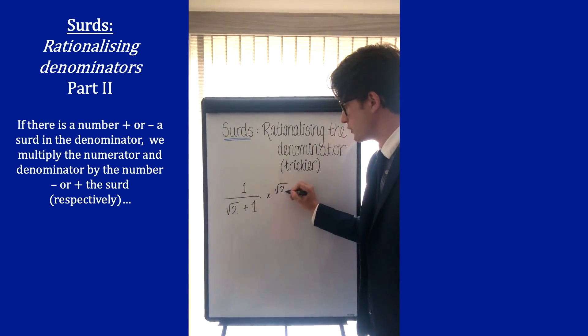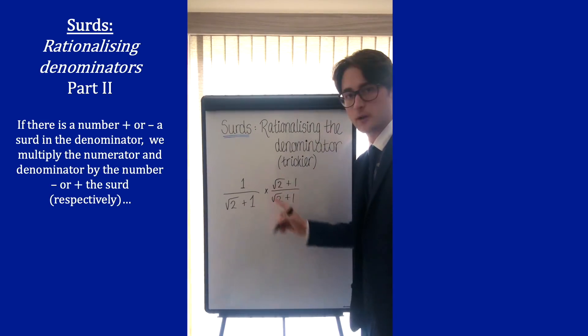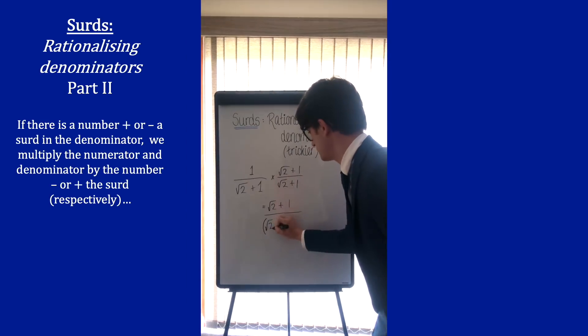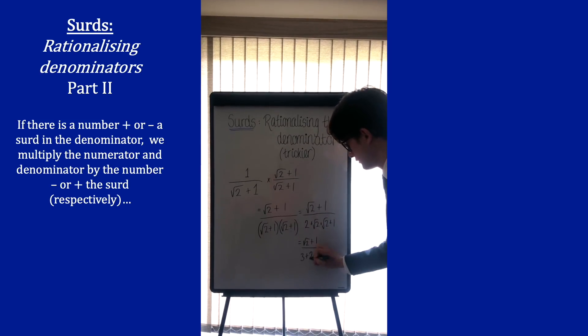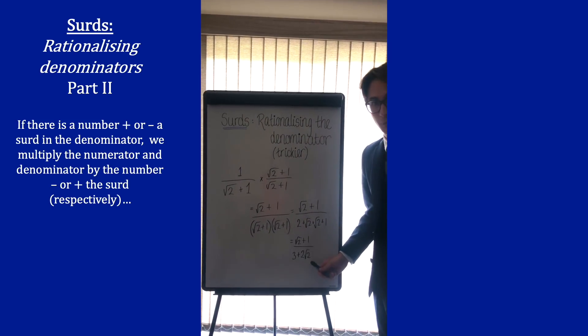The problem is this time, times it by root 2 plus 1 over root 2 plus 1, although this is times it by 1 in a clever way, we get... We still get a surd in the denominator, which we don't want.